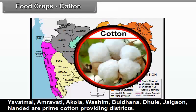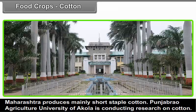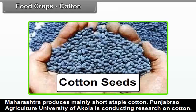Maharashtra produces mainly short staple cotton. Punjab Rao Agriculture University of Akola is conducting research on cotton and has been successful in developing seeds for Bt cotton and CAHS 468.